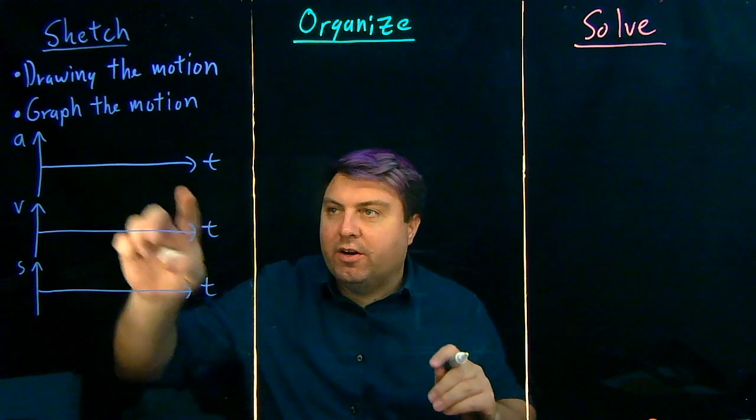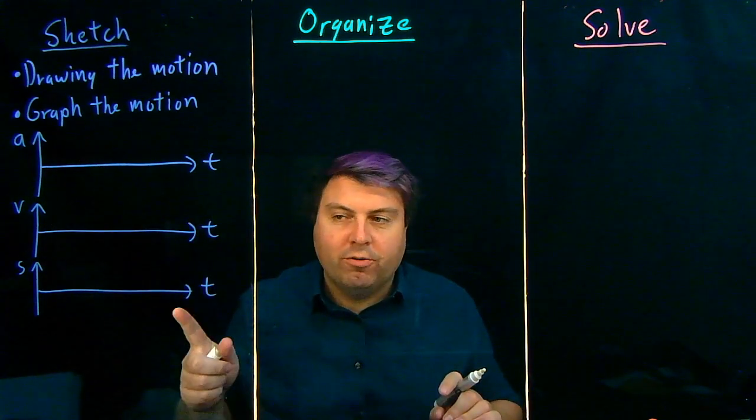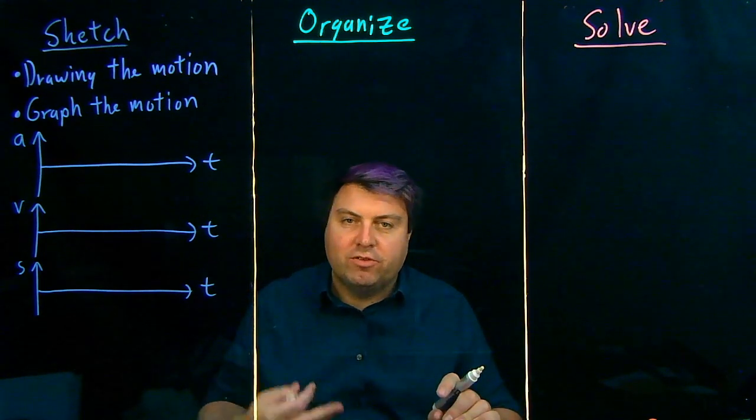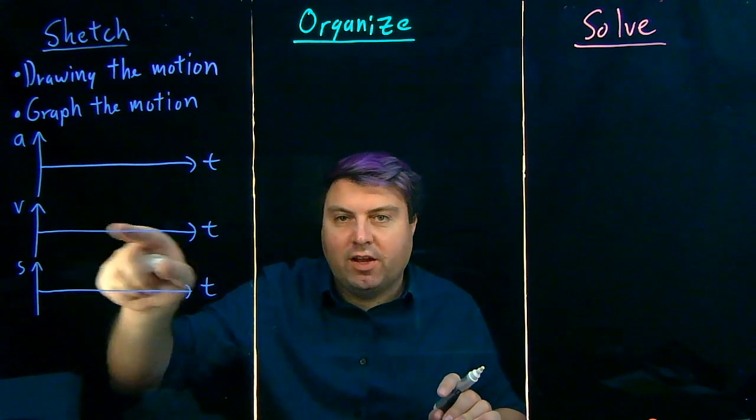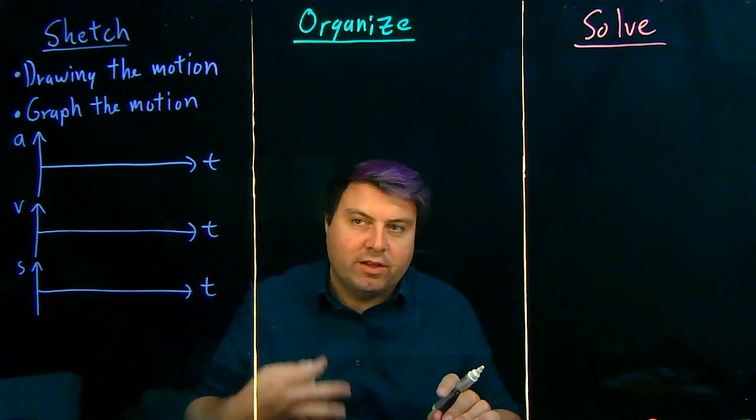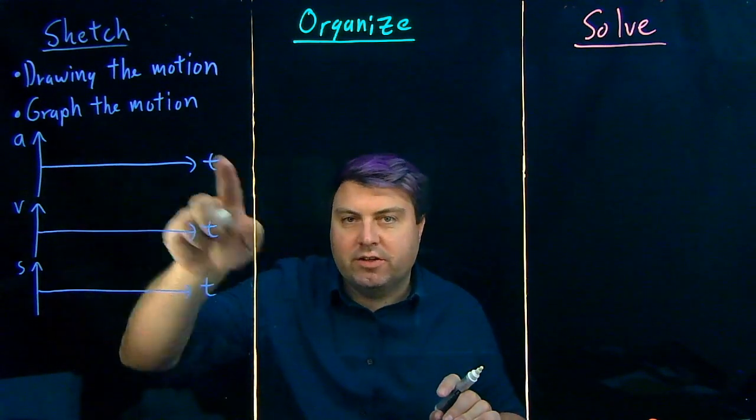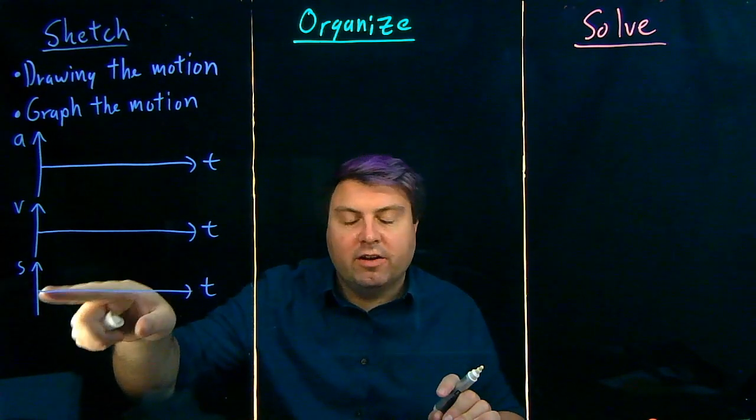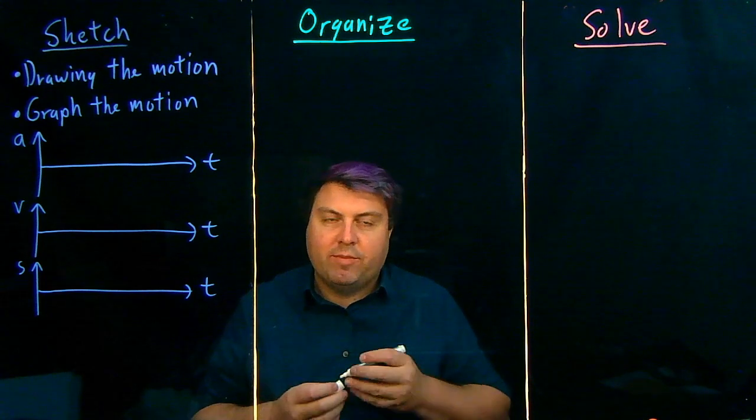Very often our acceleration versus time is going to be one horizontal line, occasionally one horizontal line then a different horizontal line if we have two accelerations. Then our velocity is either going to be a linear line with a non-zero slope if there's a non-zero value for acceleration, and then our position is going to be, at worst, a parabola.